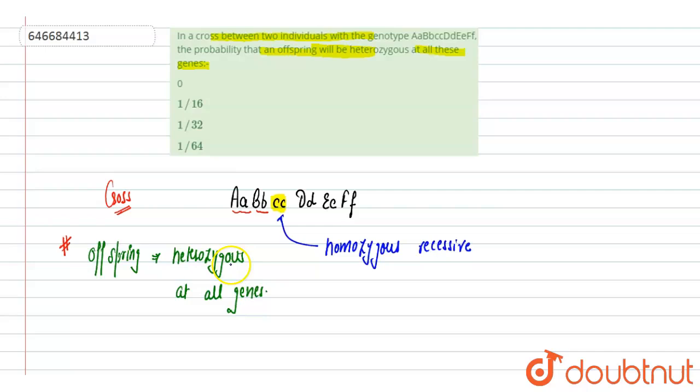So it means it should be both dominant as well as the recessive gene, dominant and recessive gene. Both these genes should be present in any of the gene to make it heterozygous.